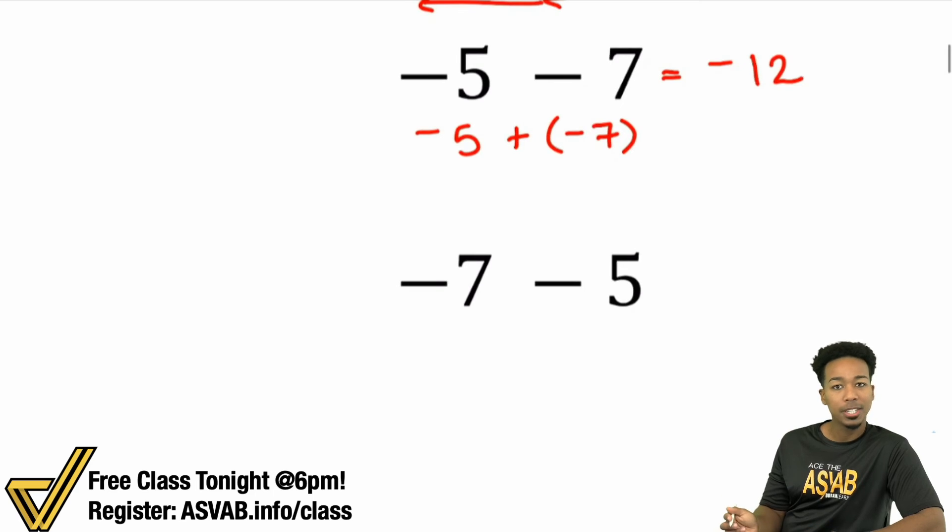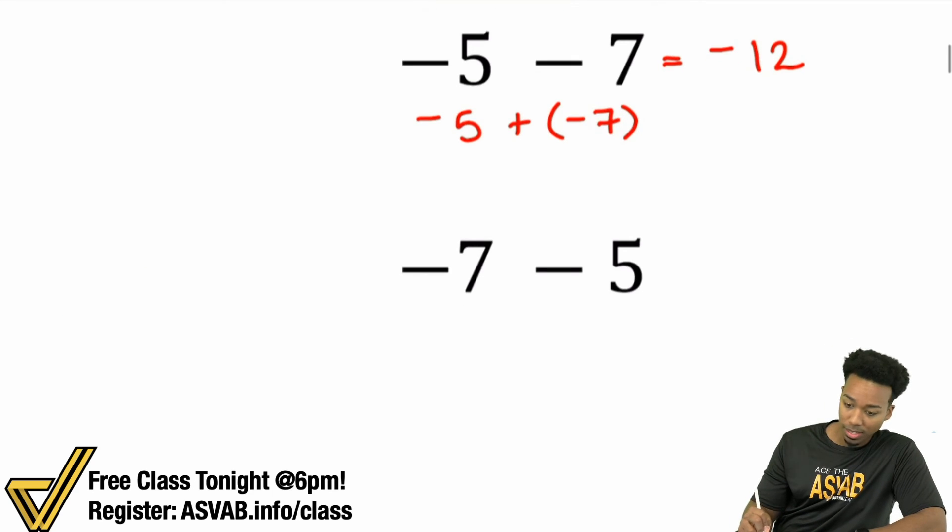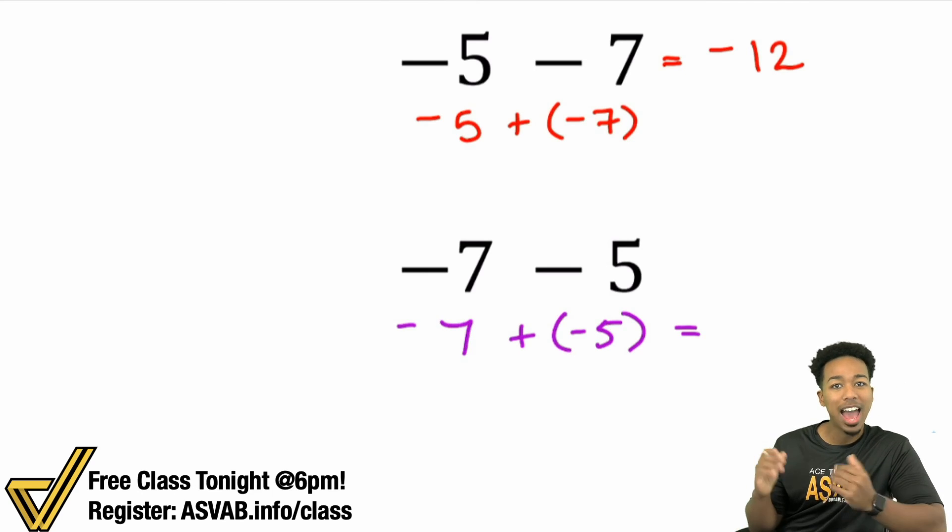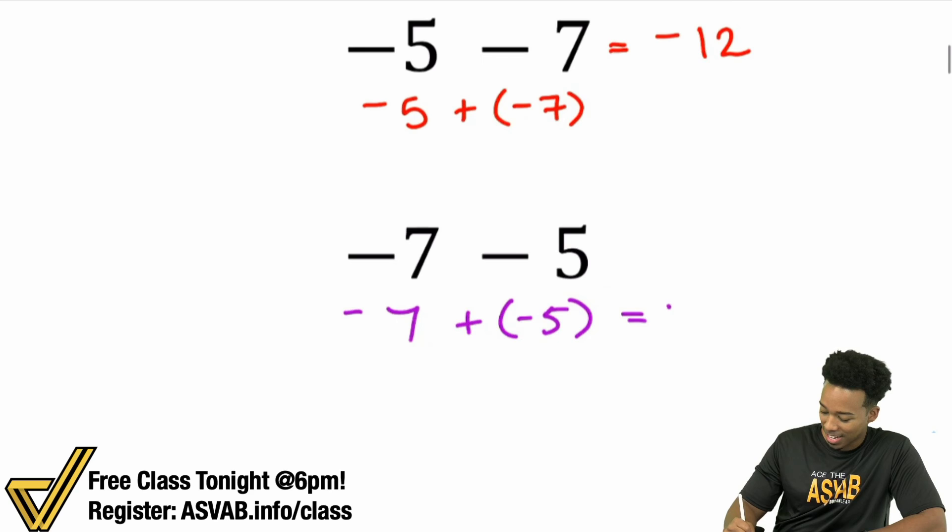And then lastly over here, negative 7 minus 5. Do these look different? Yeah, in a different order, but you'll get the same answer. Going back 5 and going back 7 is the same as going back 7 and going back 5. Same idea. And you can rewrite this over here as negative 7 plus negative 5. You're adding the same signs. So 7 plus 5 is 12, but keep it negative because they are both negative.